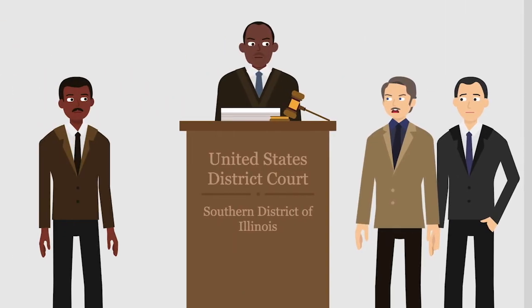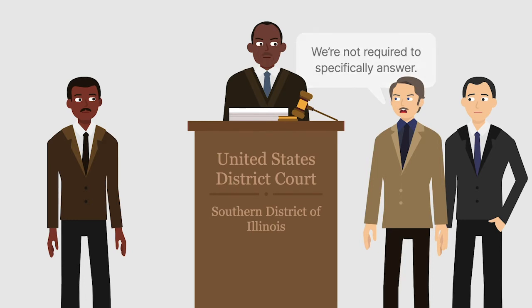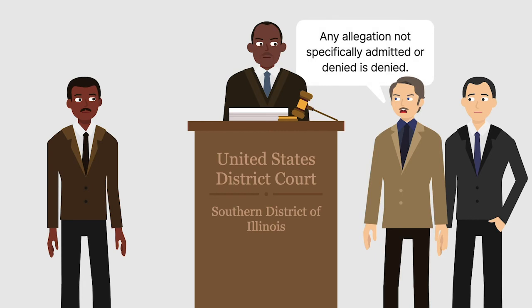In its answer, General Dynamics stated it wasn't required to specifically answer paragraphs 6 through 52 because they were directed at Clark only. At the end of its answer, General Dynamics stated that any allegation not specifically admitted or denied was denied.